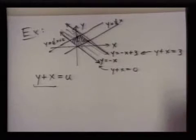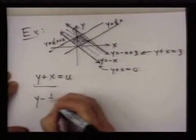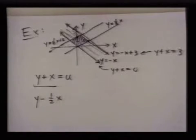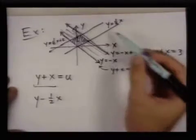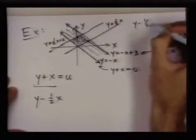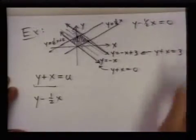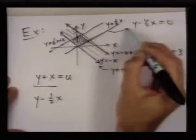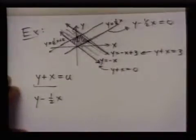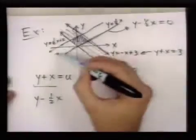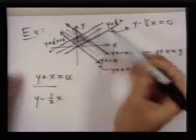Another quantity that's important in this region is the quantity y minus 1 half x because y minus 1 half x is equal to zero on this line. And on this line here, y minus 1 half x is equal to one.